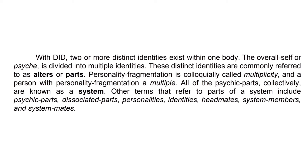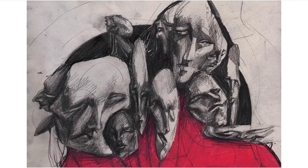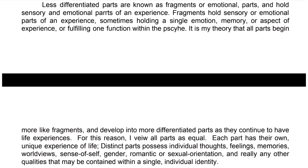Other terms referring to parts of a system include psychic parts, dissociated parts, personalities, identities, headmates, system members, and system mates. Less differentiated parts are known as fragments or emotional parts, and hold sensory and emotional elements of an experience — sometimes a single emotion, memory, or aspect of experience, or they may fulfill one function within the psyche. It is the speaker's theory that all parts begin more like fragments and develop into more differentiated parts as they continue to have life experiences.